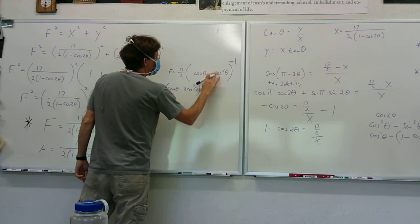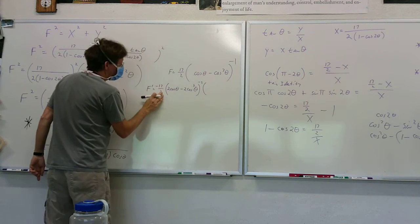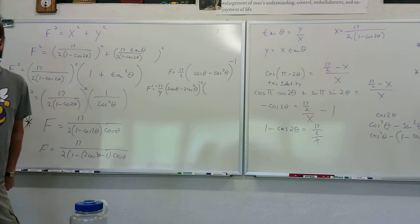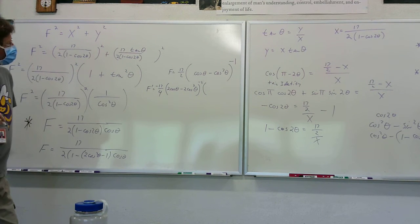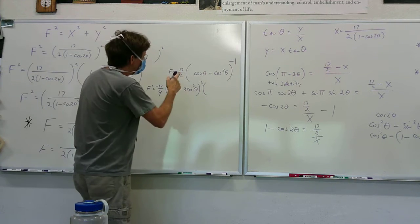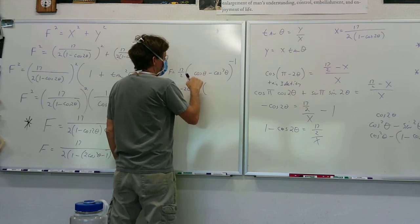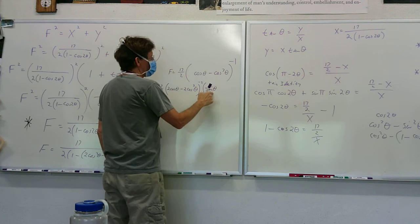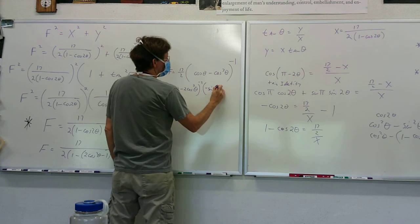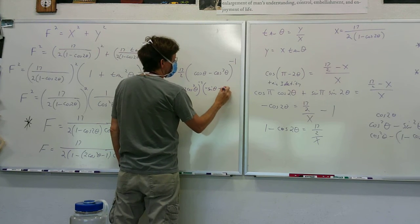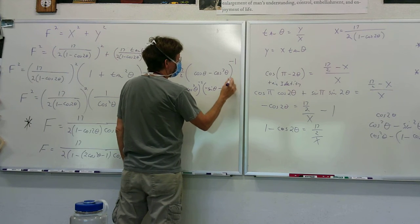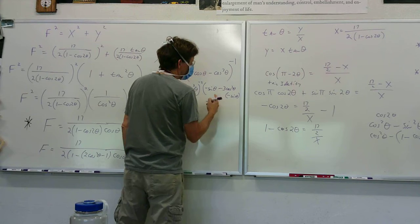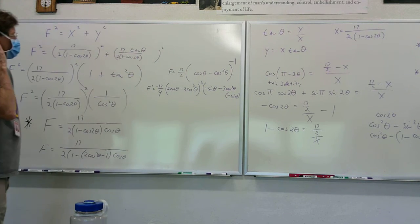If I factor out that 2, it changes the expression. Now taking the derivative: I get negative sine theta minus 3 cosine² theta times negative sine theta, because I use the power rule there.